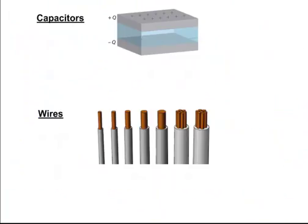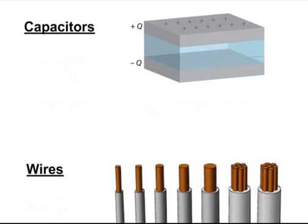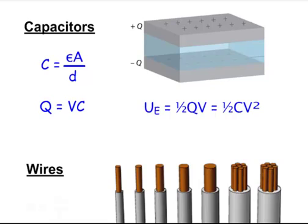Let's move to our circuits, capacitors, and wires chapter. If we think about capacitors, just think about your keyboard. Capacitance equals epsilon times area over distance. The greater the area of your plates, the more charge you can hold. The smaller the distance between the plates, the more charge you can hold. That comes back to Q equals VC — just think about 'the channel' to memorize that equation. We also have a potential energy equation for capacitors: one half QV or one half CV squared, which is on your equation sheet.